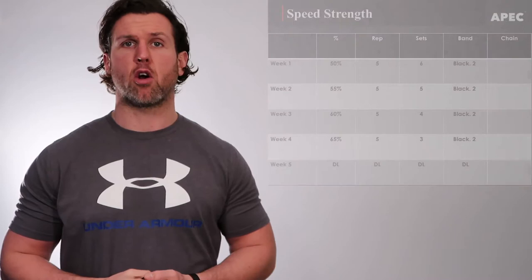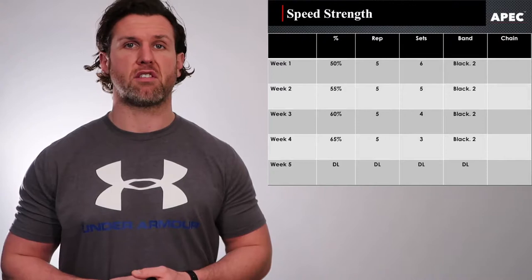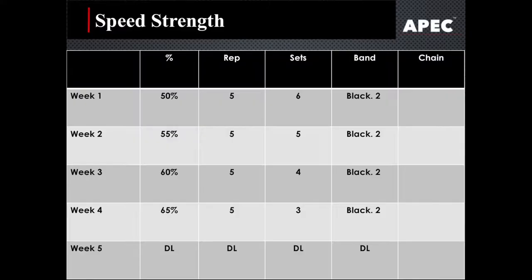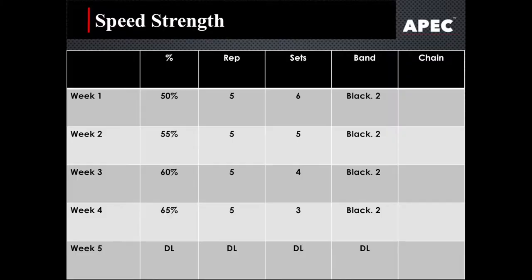Let's now go and look at how we develop speed-strength with our programming. Week 1: 50% of our 1 repetition max, 5 sets of 6 repetitions, with a black band as the training tool. Week 2: 55% of our 1 repetition max, 5 sets, repetitions come down to 5, still a black band. Week 3: 60%, same sets, repetitions down to 4, and again a black band.